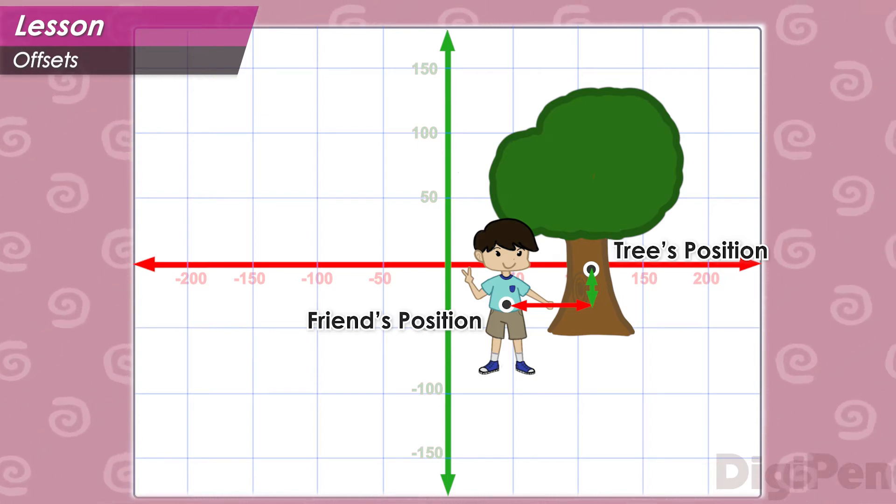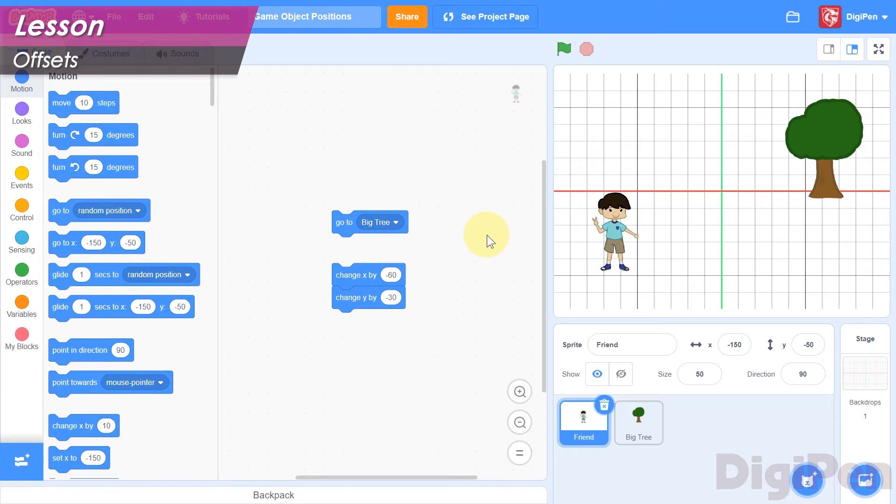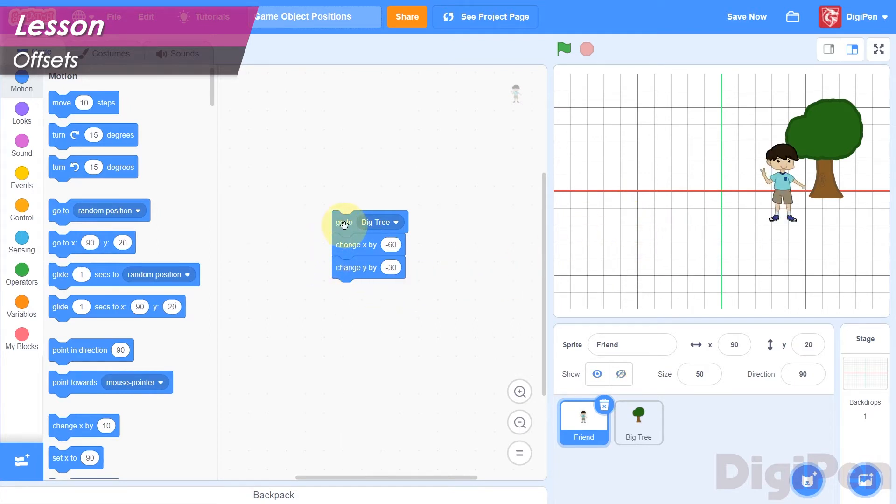To move your friend to the tree, what you really want to do is move them to the position of the tree plus some offset to put them at a position a comfortable distance away from it. We can do this in Scratch with a clever combination of blocks. First, we use a go-to block to move your friend to the exact position of the tree, and then immediately afterward, we use the change x and change y blocks to apply the offset. In this case, your friend is about 60 units to the left of the tree, which means an x offset of negative 60, and about 30 units below it, meaning a y offset of negative 30. If we use these change x and change y blocks immediately after the go-to block, then nobody will have a chance to see that your friend ever had the same position as the tree.